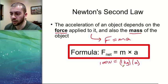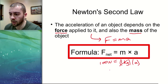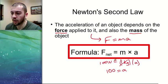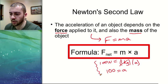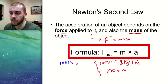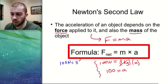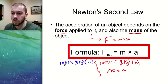We could get the acceleration by itself — anything times one is itself, so the acceleration would be 100. What if we compared that to a second object that has the same 100 Newton force acting on it? So we have two objects with the same force. This second object has a mass of maybe five kilograms, and we want to see what acceleration it would have due to the same force.